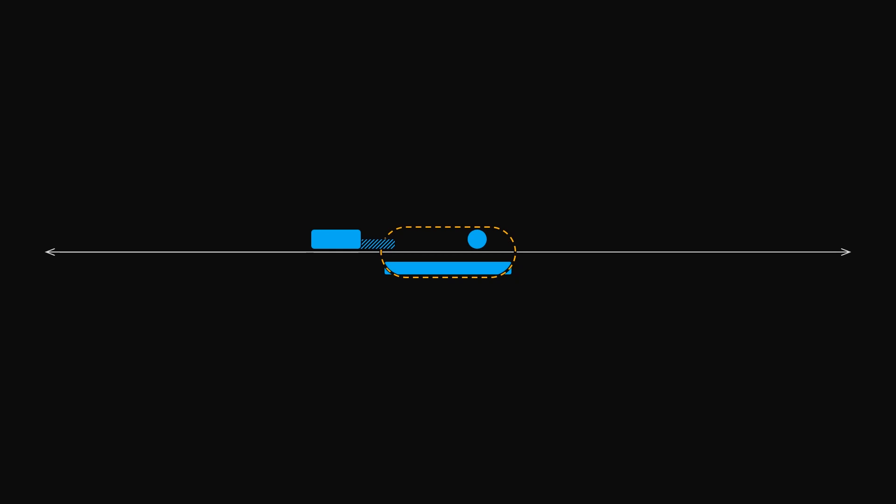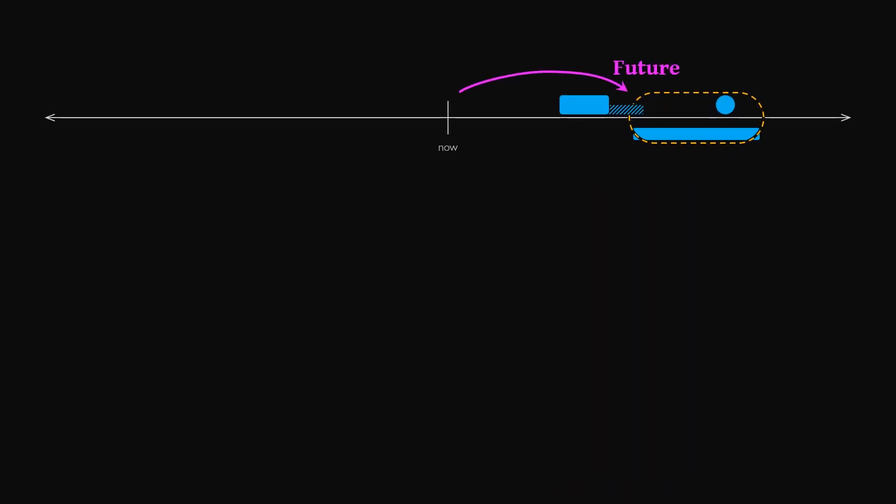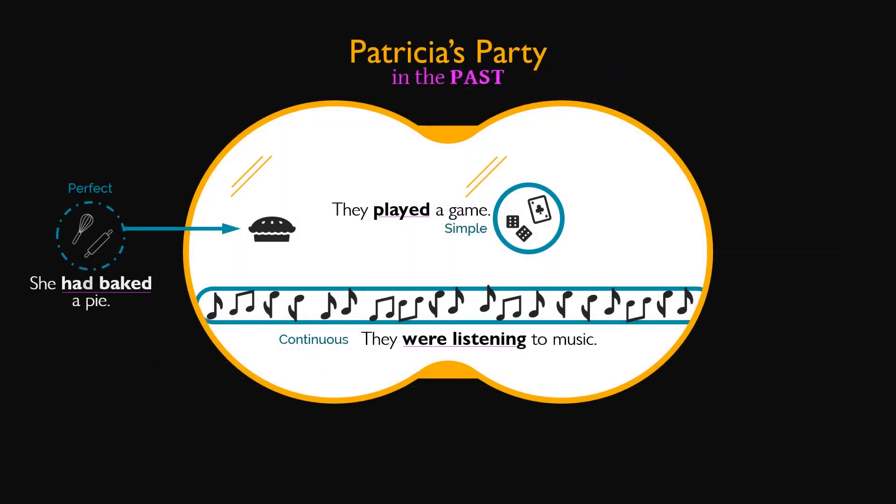Now, everything that we've covered about simple, perfect, and continuous tenses in the context of Patricia's party is consistent whether we're discussing the party ahead of time, sharing details while it's happening, or recounting the events later. In other words, these verbs can all be past, present, or future, and that wouldn't affect their aspects.